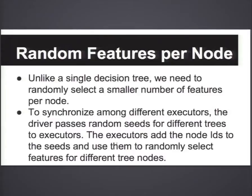We also have to do random feature selection per node. In order to synchronize among different workers, we generate a random seed per tree and pass it to each executor. The executor synchronizes the random feature set by adding the partition ID to that random seed and selecting features randomly. That way, every executor knows what features were selected for that particular node.